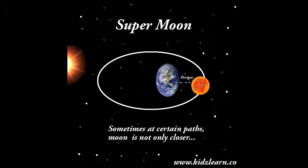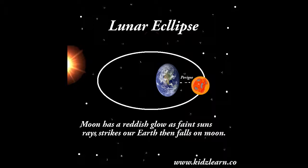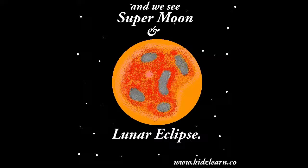Sometimes, at certain paths, the Moon is not only closer — the Sun, Earth, and Moon are in a straight line. The Moon has a reddish glow as faint sun rays strike our Earth and then fall on the Moon. Then we see a Super Moon and Lunar Eclipse.